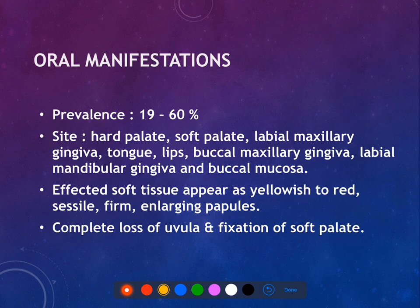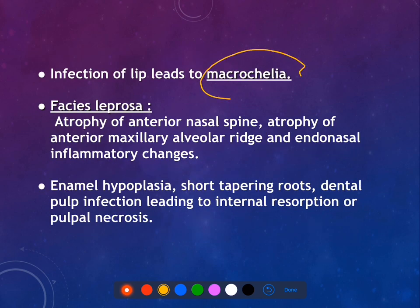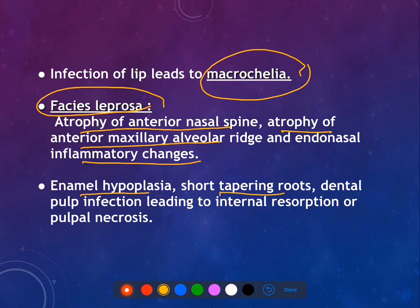Regarding oral manifestations, only 19 to 60 percent of cases will have oral manifestations. The most commonly involved site is the hard palate. The affected soft tissues appear yellow to red, and in some cases there is complete loss of the uvula with fixation of the soft palate. Macrochilia — infection of the lip leading to lip enlargement — is an important feature. Facies leprosy involves atrophy of the anterior nasal spine, anterior maxillary alveolar ridge, and endonasal inflammatory changes. Dental manifestations include enamel hypoplasia, short tapering roots, pulpal infections, internal resorptions, and necrosis.